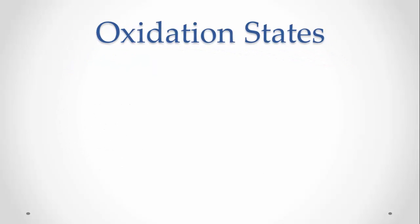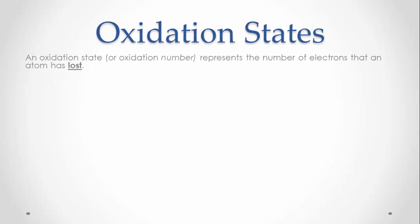Let's start by defining what an oxidation state or number is. An oxidation state is a number that represents the number of electrons that an atom has lost when compared to its elemental state.